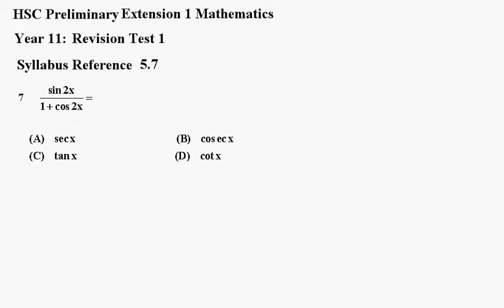Number 7. Sine 2x over 1 plus cos 2x equals a, b, c or d. Now you notice all the answers have a single x in them.